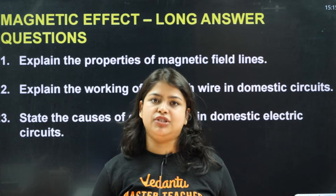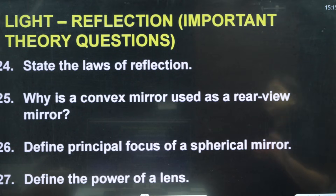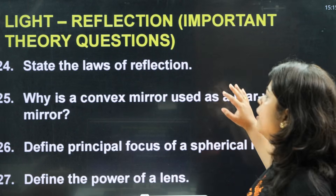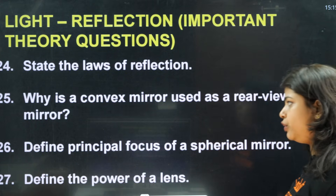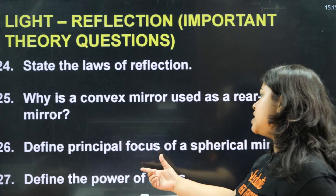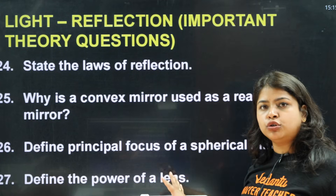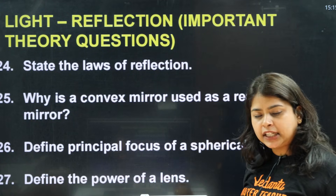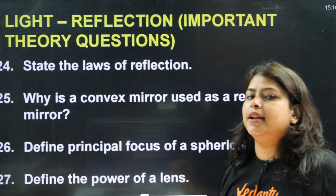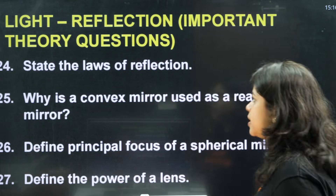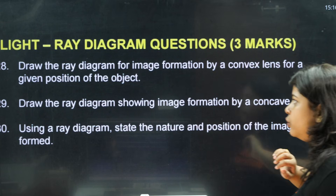Next chapter: Light — Reflection and Refraction. Important theory questions: State the law of reflection (two marks). Why is a convex mirror used as a rear-view mirror? Define the principal focus of a spherical mirror. Define the power of a lens. From these four questions, two to three are fixed — they will definitely come in the exam.